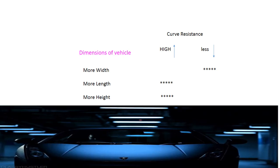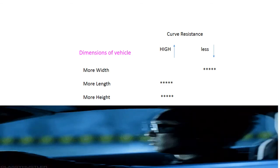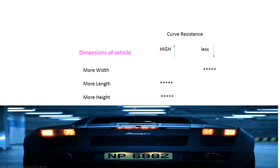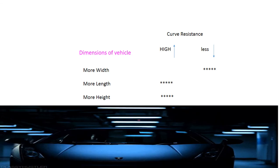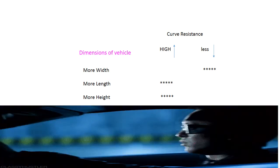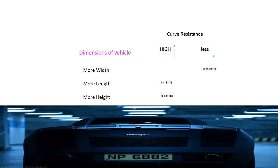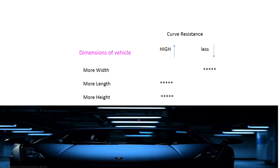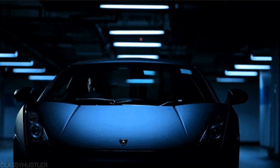More width of the vehicle body is more less curve resistance. More length of vehicle body gives more curve resistance. The less height of the body is geared less curve resistance. So nowadays we can see the branded cars are less depth, more width.